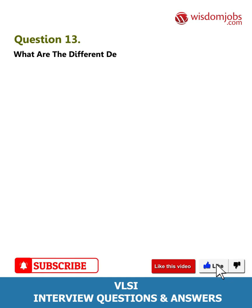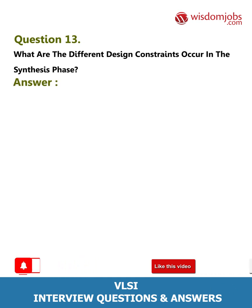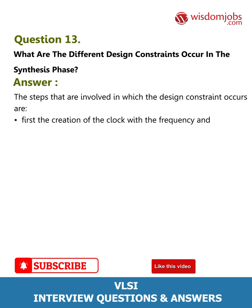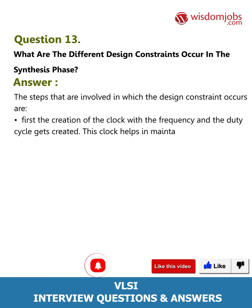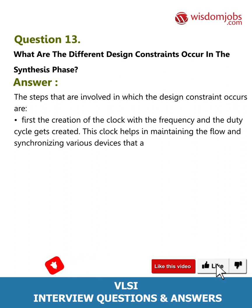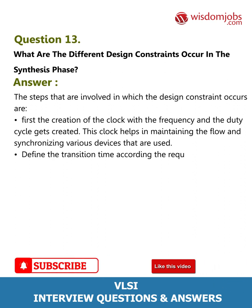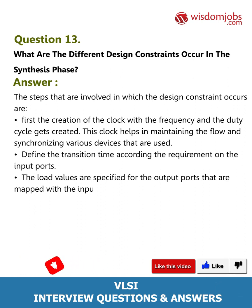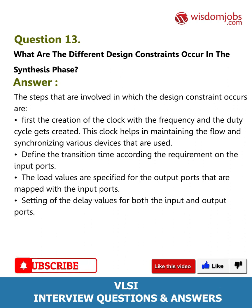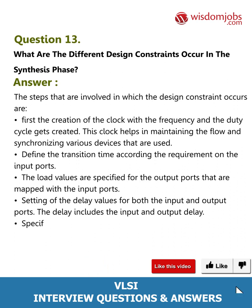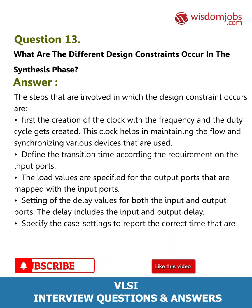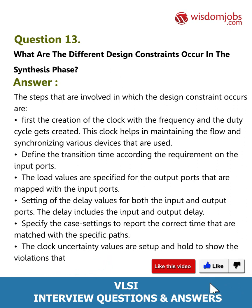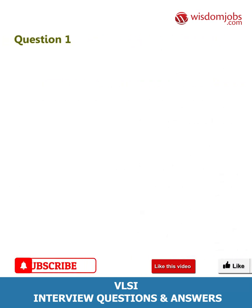Question 13: What are the different design constraints that occur in the synthesis phase? Answer: The design constraints in synthesis include: creating a clock with specified frequency and duty cycle to synchronize devices; defining transition time on input ports; specifying load values for output ports mapped to input ports; setting delay values for both input and output ports; specifying case settings to report correct timing for matched paths; and setting clock uncertainty values for setup and hold to show occurring violations.